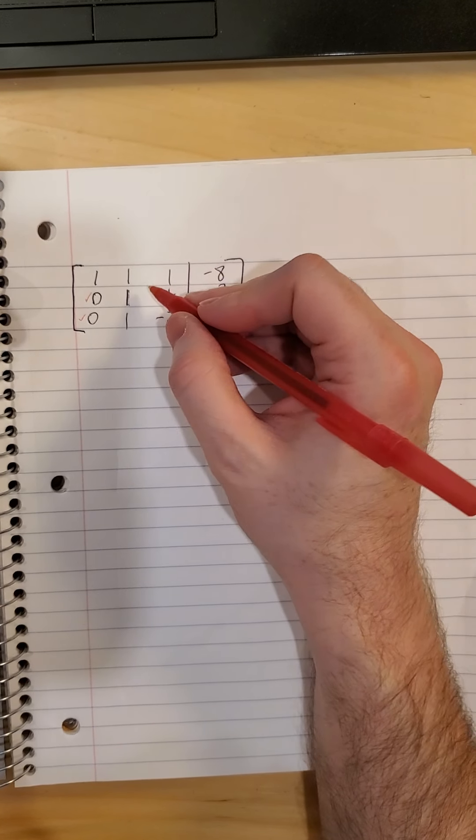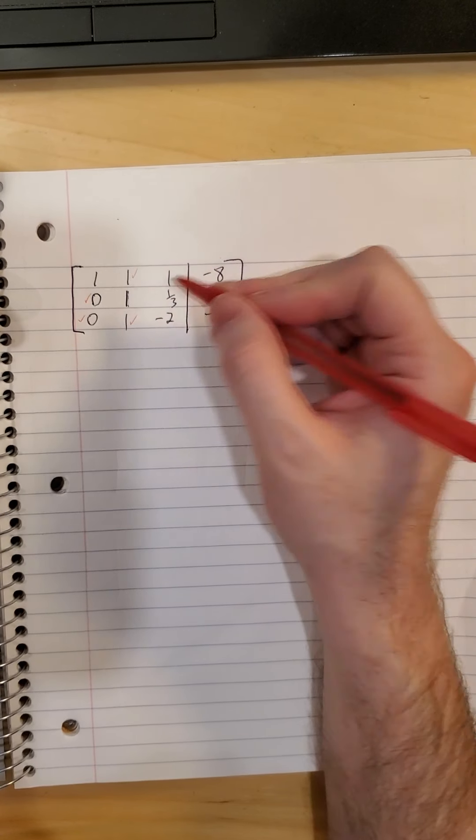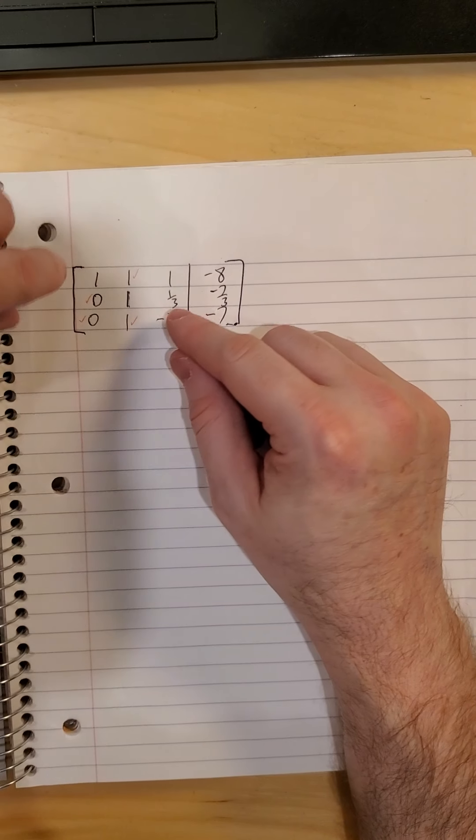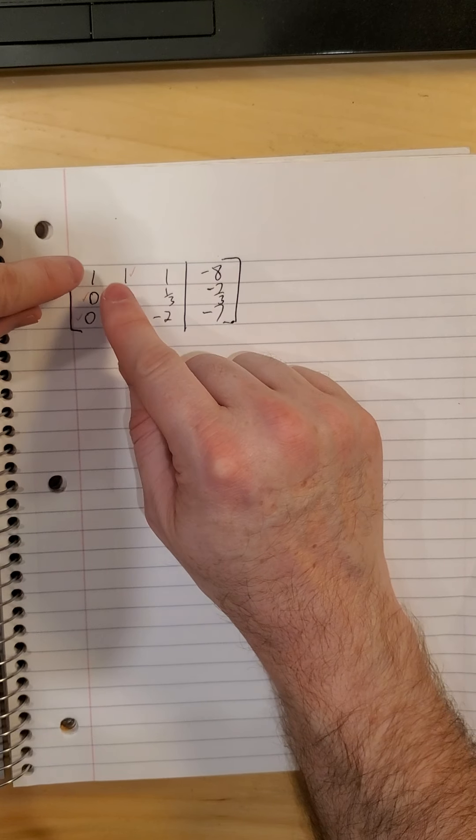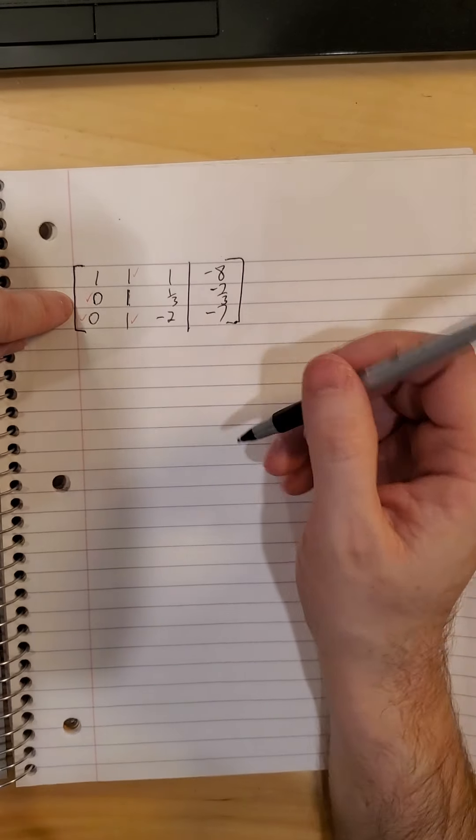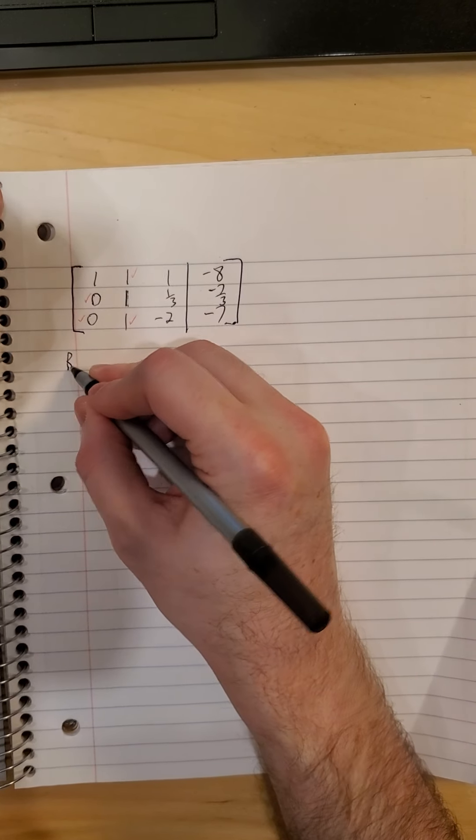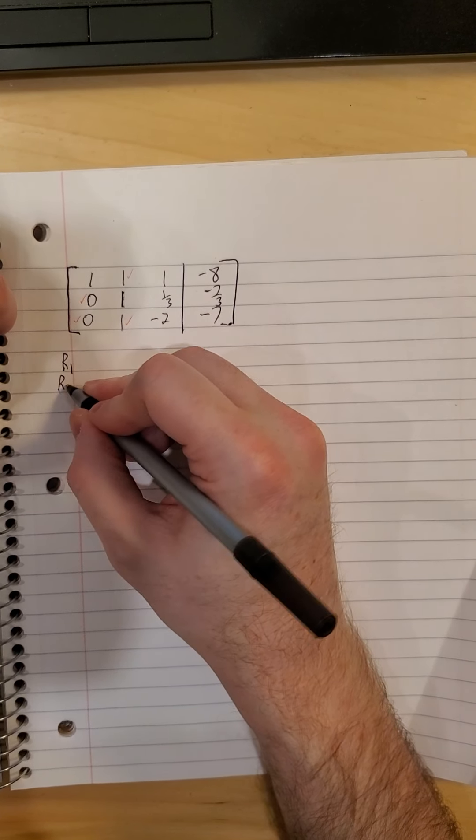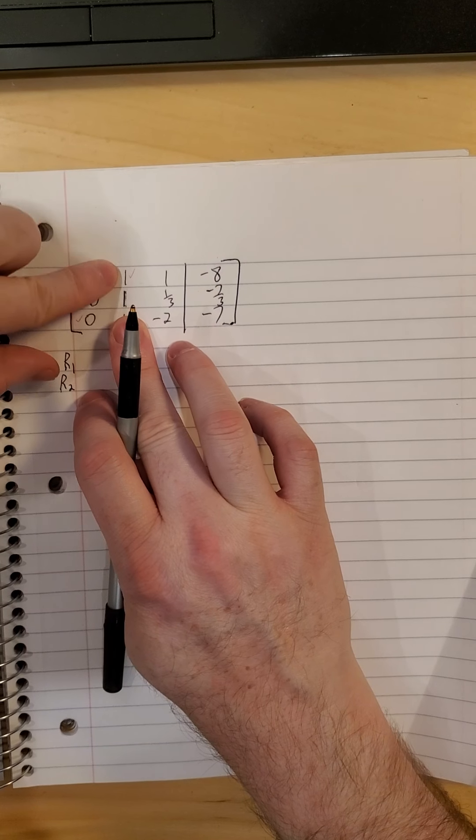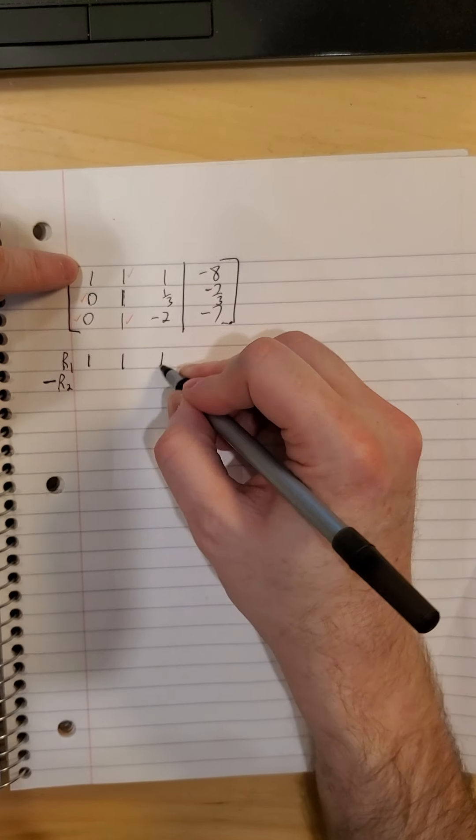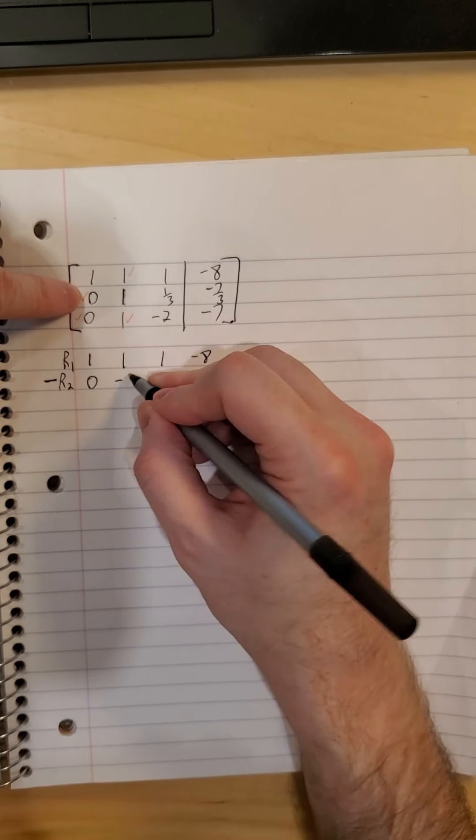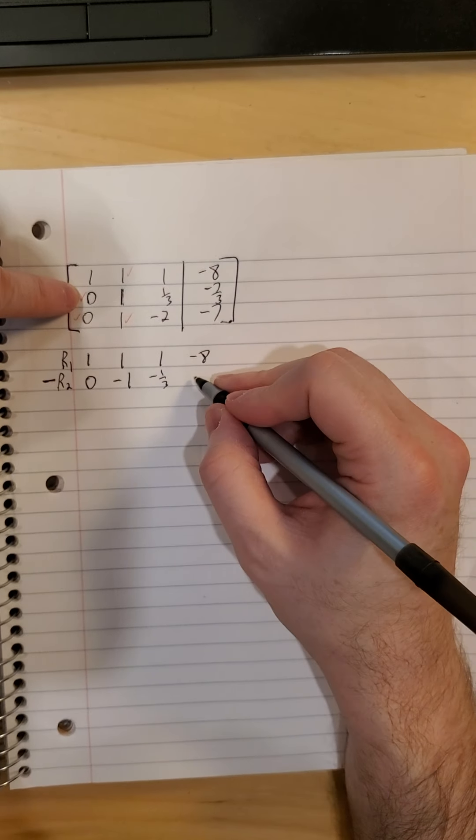So now instead of this one and this one being on my hit list wanting to turn them into zeros, now it's this one and this one that I want to turn into zeros. A little note so that we don't destroy our work on the previous column. Row 1 will remain unchanged. So I'm going to have to manipulate row 2 to do that. So row 1 will have to stay as it was previously. Row 2 to get a zero out of these two elements. I'd have to multiply row 2 by a negative 1. So row 1, 1, 1, 1, negative 8. Row 2, zero is its own opposite. Negative 1, negative 1 third, and positive 7 thirds.